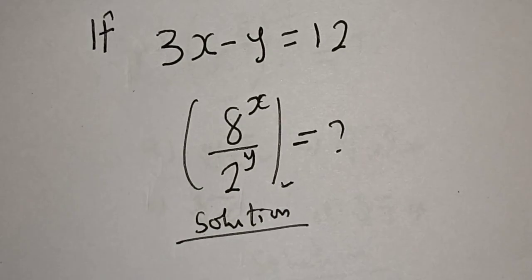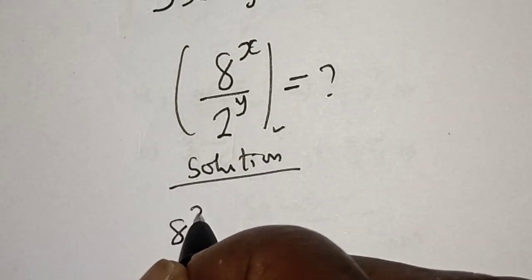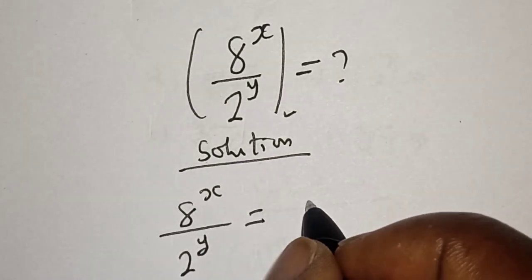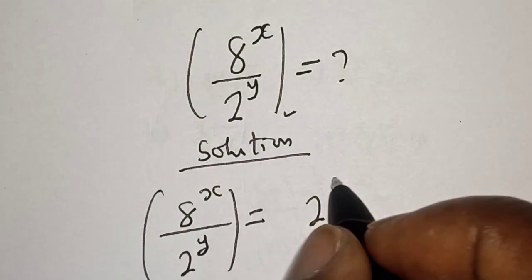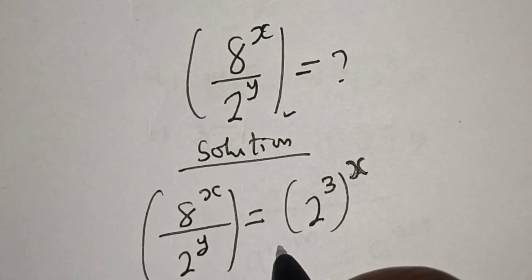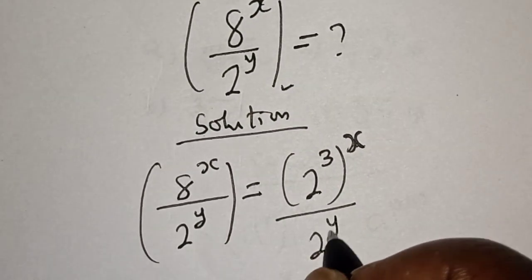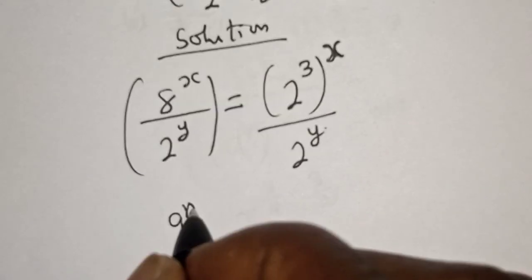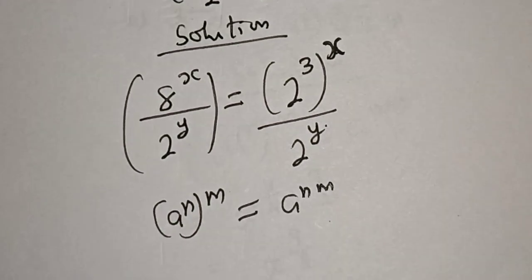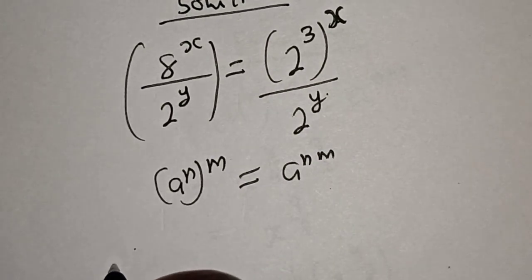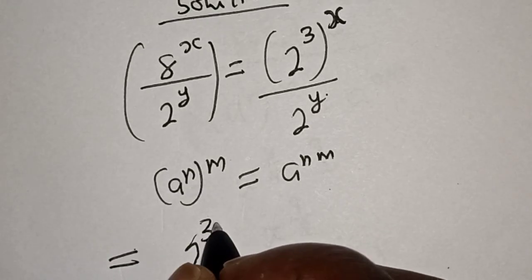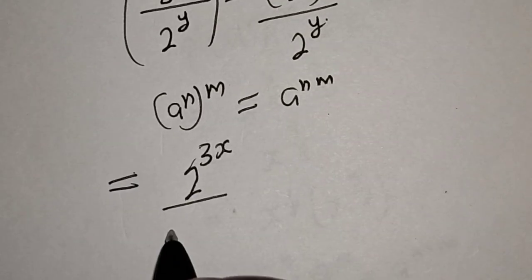Let's start with the solution. We have 8 raised to power x over 2 raised to power y. This is equal to 2 raised to power 3, to the power of x, over 2 raised to power y. Now remember this rule: if you have e raised to power n raised to power m, this is equal to e raised to power n times m. So this gives us 2 raised to power 3x over 2 raised to power y.